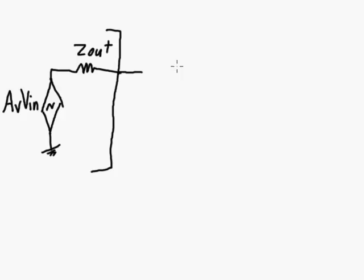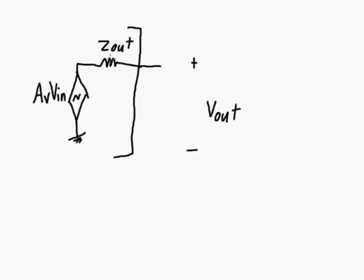So if you have no load at the output here, we could still measure a voltage V out. But there's not going to be any current that's coming out of the amplifier. So there won't be any voltage drop across Z out. So with no load, V out will be equal to AV times V in.